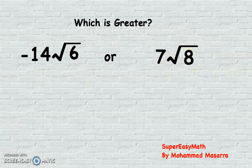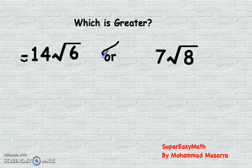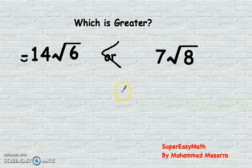The last example: -14√6 and 7√8. Here we are dealing with a negative number and a positive number. Without even squaring, we know that any negative number is smaller than any positive number, so -14√6 is smaller than 7√8.